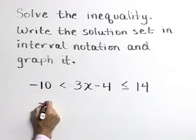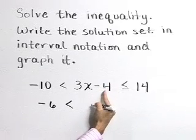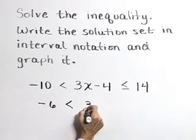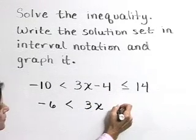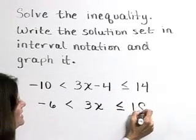Negative 10 plus 4 is negative 6. Adding 4 to the middle cancels out that negative 4, leaving us with a 3x term. And on the right hand side, 14 plus 4 is 18.